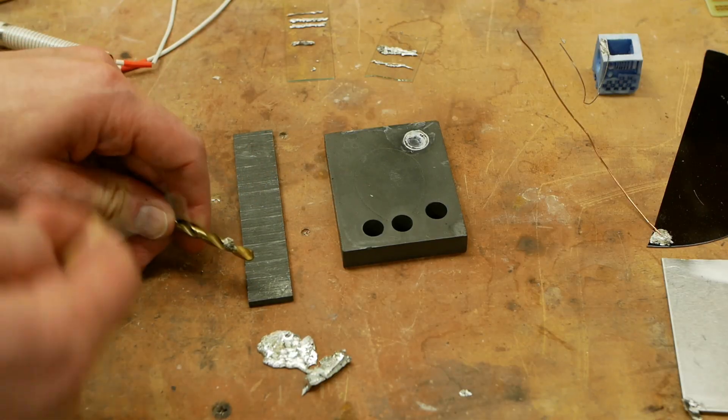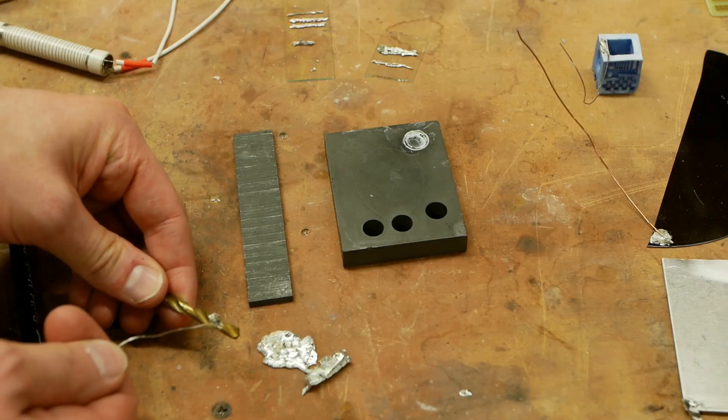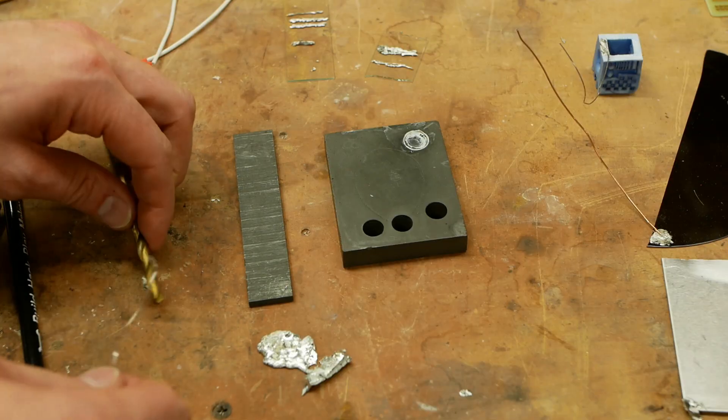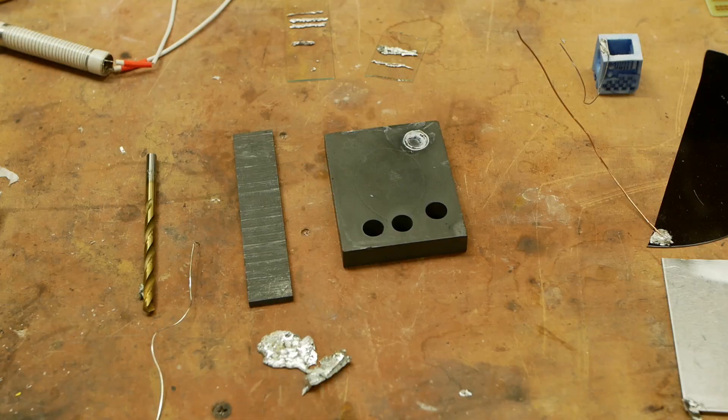I should also point out this is just soft solder. And so you're not going to make a trailer hitch out of this. You're going to break the solder if you pull hard enough. It's meant more for electrical contact and light mechanical connections, but it is still pretty impressive in what it can do.